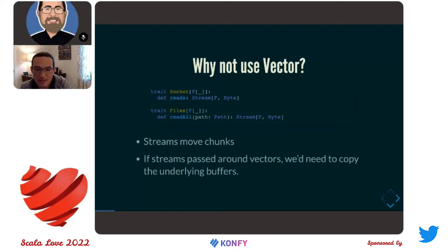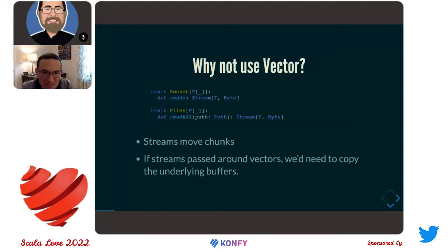Overall we have these capability traits that provide the ability to get streams of primitive values. The socket trait lets you get a stream of all bytes from a TCP connection. If you have a file system, you can imagine streaming all the content in from a terabyte-sized flat file. The types are the telling things — in each case we have a stream that evaluates effects of type F and gives us elements of bytes. They don't give us elements of byte buffers or byte arrays. We want to keep our stream algebra in terms of the most primitive internal data type, the byte.